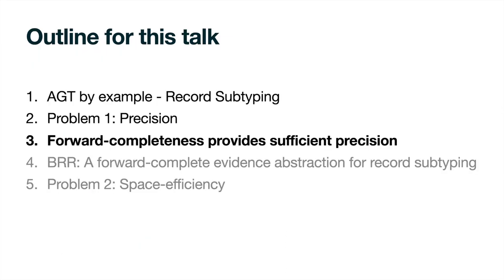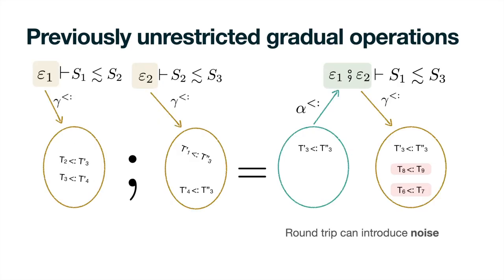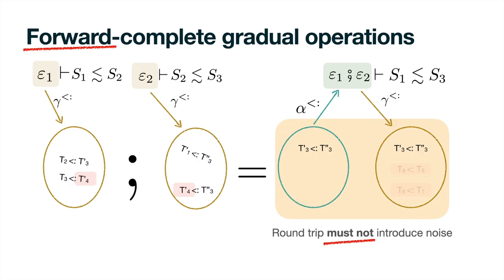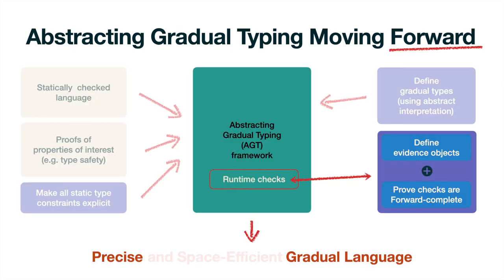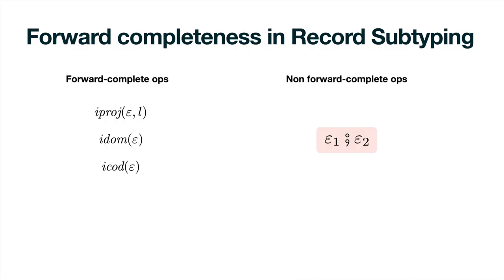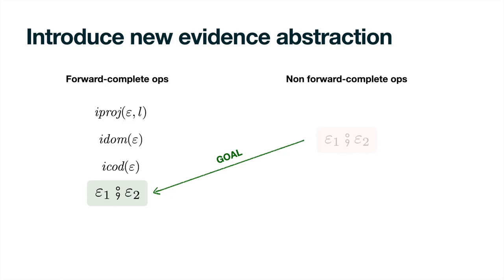To solve this problem, we propose forward completeness as a design criterion for AGT. Without restrictions, computing consistent transitivity can introduce noise, as the filtered set may contain fewer elements than the meaning of the corresponding evidence object. In this paper, we propose introducing a new abstraction for evidence objects, restricting all runtime operations to be forward complete. That is, the result of consistent transitivity must introduce no noise in its meaning outside of relational composition — the sets must stay the same after a round trip. When we prove that all runtime operations are forward complete, we outlaw introducing noise, and in this way we produce a precise gradual language.